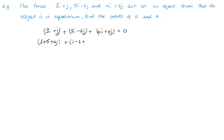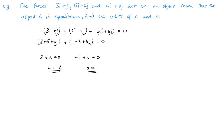For the j components we have one minus two plus b. So eight plus a must equal zero, meaning a equals minus eight. And one minus two plus b equals zero, so b equals positive one. Those are the values of the third force that make the total equal to zero.